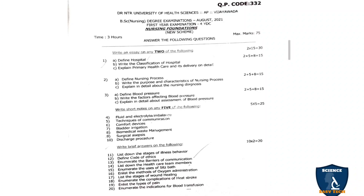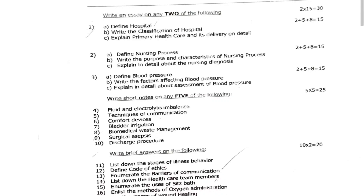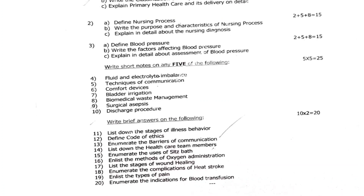Next is Nursing Foundations, question paper code 332. The pattern is the same as psychology. Essay questions: 1a: define hospital — 2 marks. 1b: write the classification of hospital — 5 marks. 1c: explain primary healthcare and its delivery in detail — 8 marks, totaling 15 marks. 2a: define nursing process — 2 marks. 2b: write the purpose and characteristics of nursing process — 5 marks. 2c: explain in detail about nursing diagnosis — 8 marks. 3a: define blood pressure — 2 marks. 3b: write factors affecting blood pressure — 5 marks. 3c: explain assessment of blood pressure in detail — 8 marks.